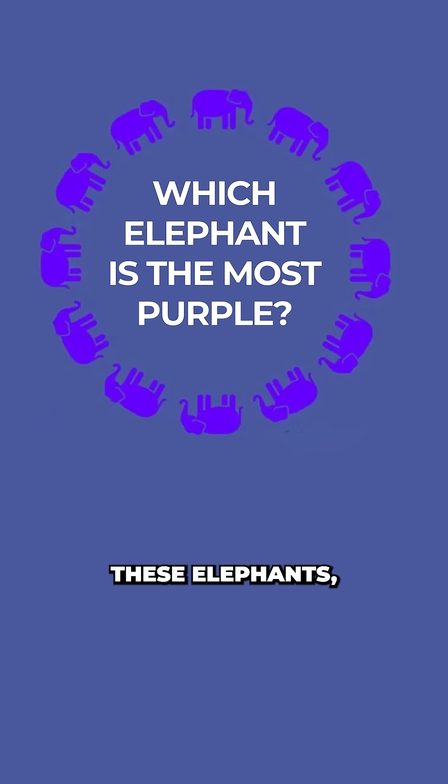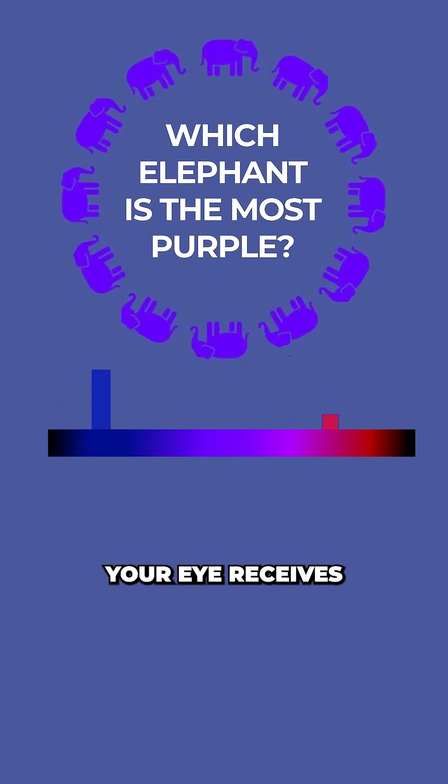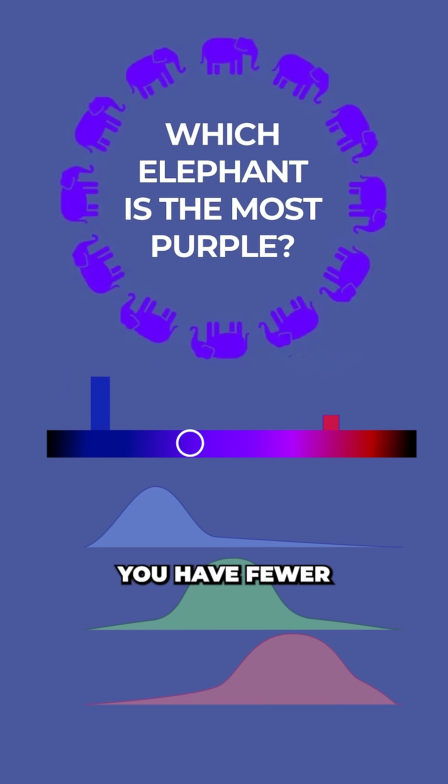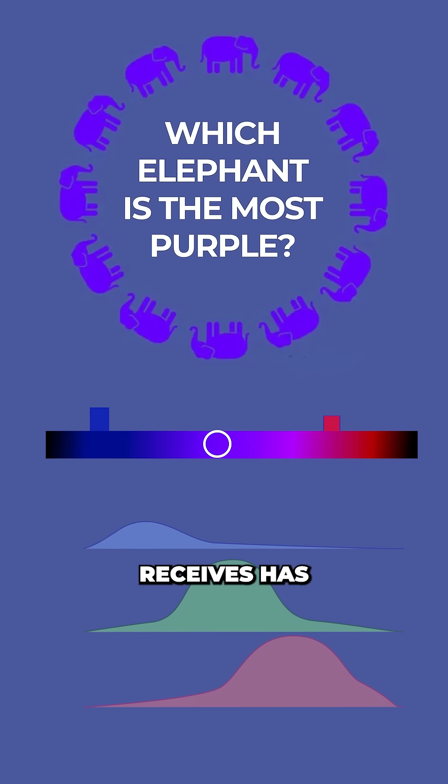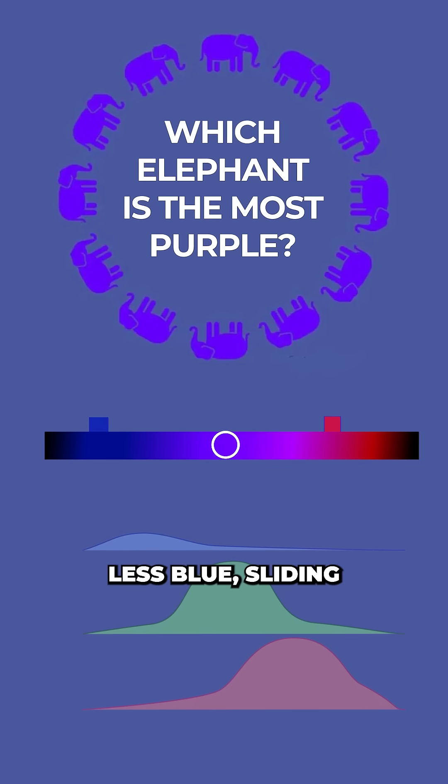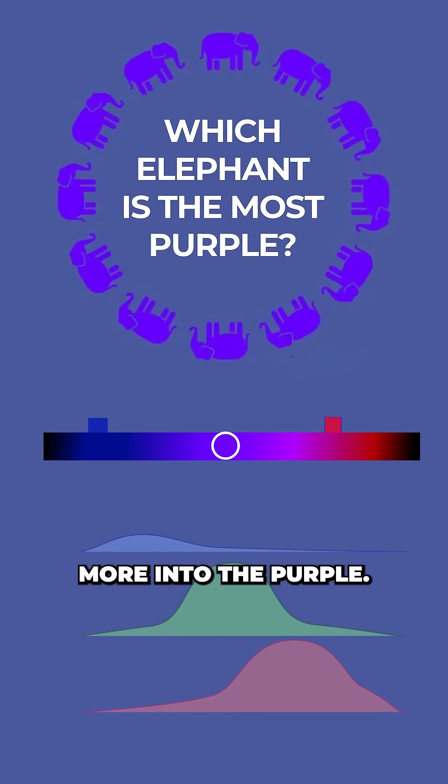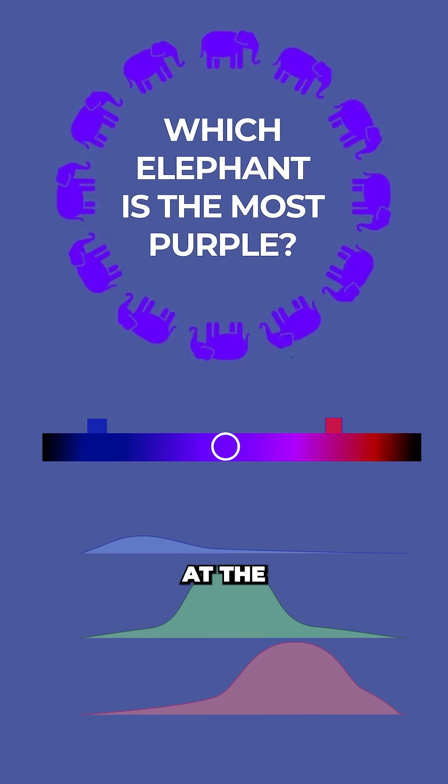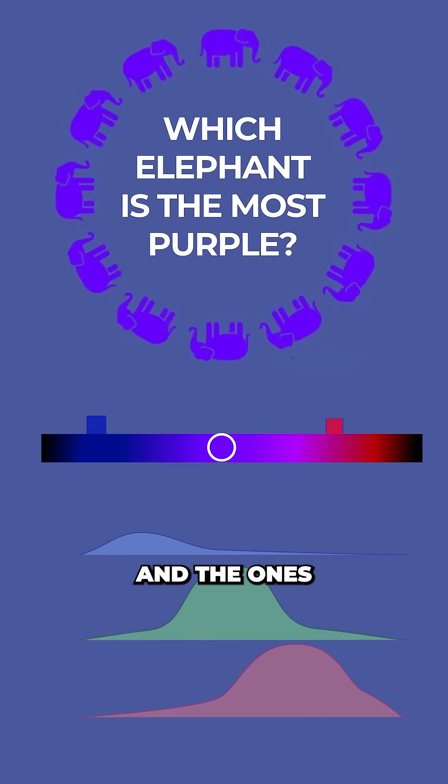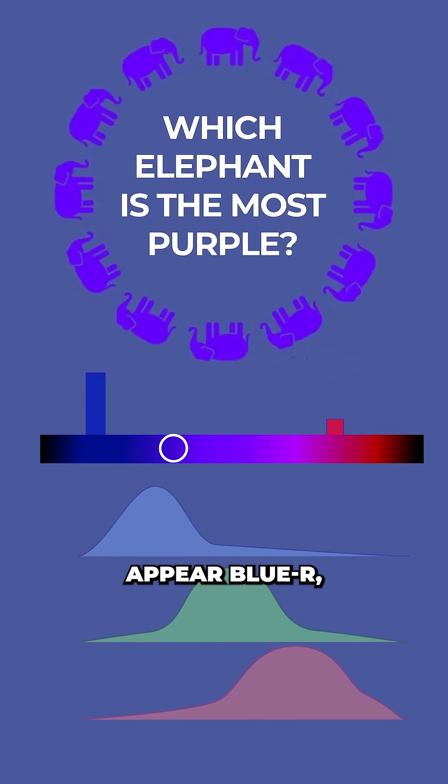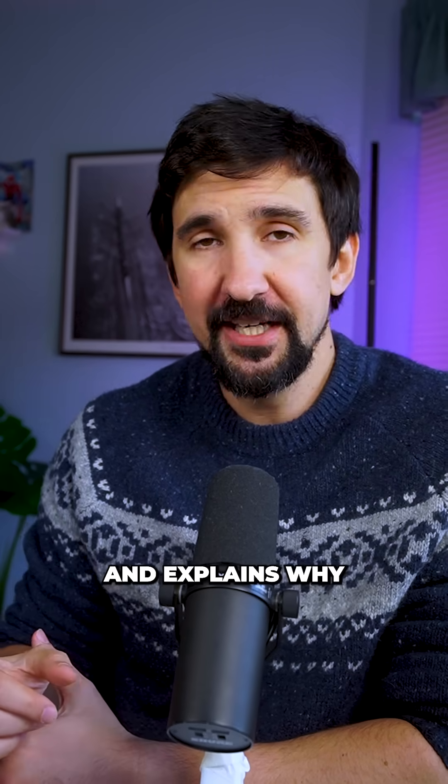That means when you stare at one of these elephants, the signal your eye receives is this. But because you have fewer blue cells, the signal that your brain receives has less blue, sliding the perceived color more into the purple. This makes any elephant that you stare at the most purple elephant. And the ones that you can see out of your periphery appear bluer because they create a stronger blue signal. This solves the illusion and explains why.